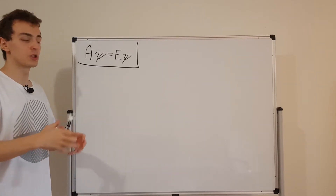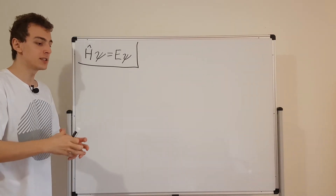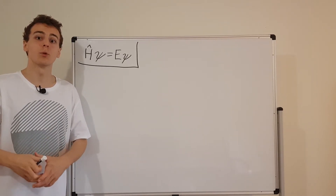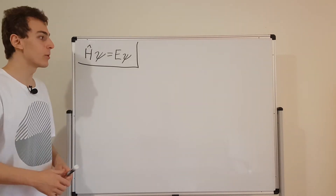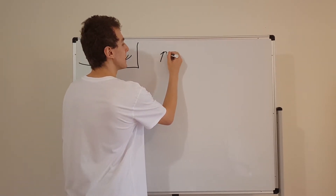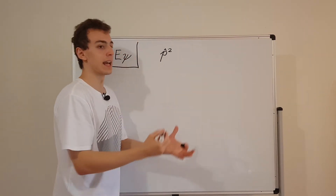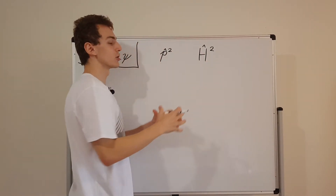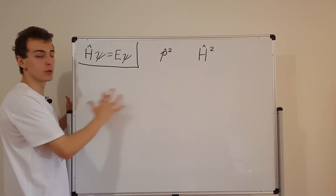So what does it mean to square an operator? This is an operator. If you square an operator, that means you're doing the operator twice. The square of the momentum operator is something we looked at when we were talking about kinetic energy. When we were squaring the momentum operator, we had p squared, and that was the same as applying p once and then p again. In this video, we're going to be talking about H squared, so we're going to be applying the Hamiltonian once and then again.